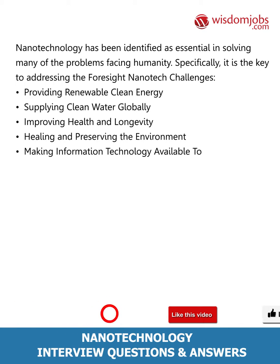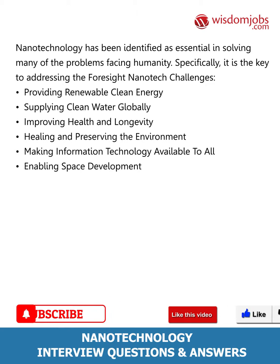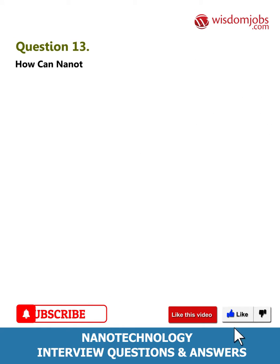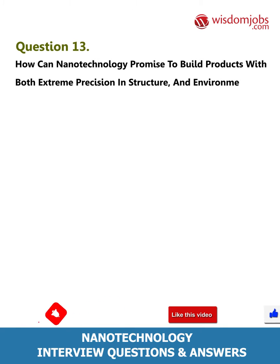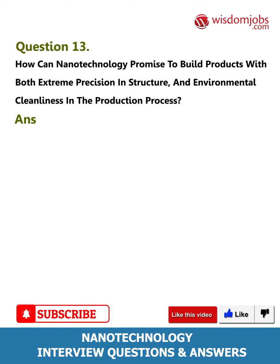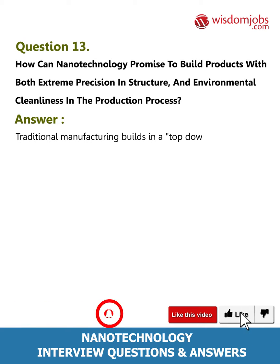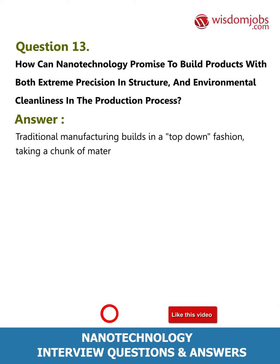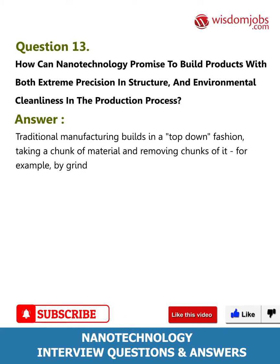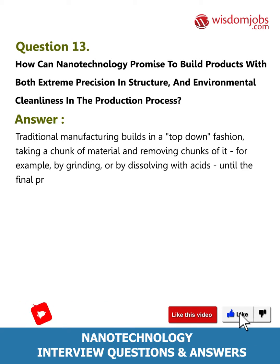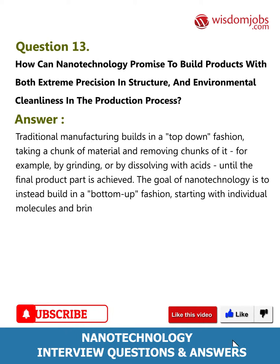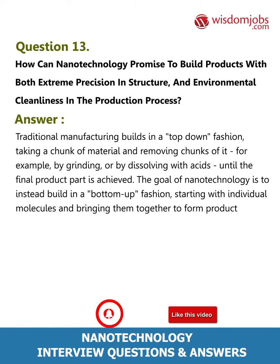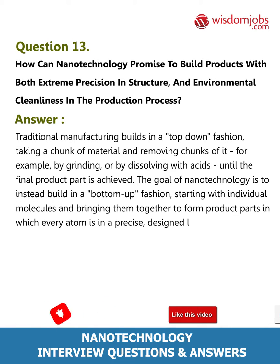Question 13: How can nanotechnology promise to build products with both extreme precision and environmental cleanliness? Traditional manufacturing builds in a top-down fashion, taking a chunk of material and removing parts of it — for example by grinding or dissolving with acids — until the final product part is achieved. The goal of nanotechnology is instead to build in a bottom-up fashion, starting with individual molecules and bringing them together to form product parts in which every atom is in a precise design location.